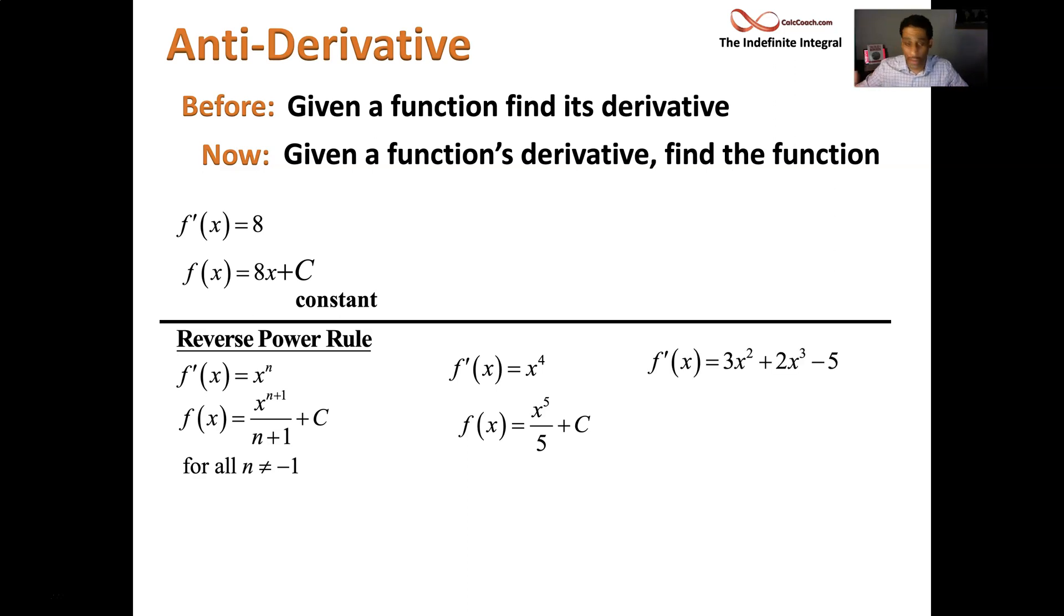What if you have a whole series of these, a bunch of these added together? A polynomial just built up a bunch of terms just like this. Well, we'll do each term separately. What about a constant? You know what? Just carry the constant down and focus on the x term.